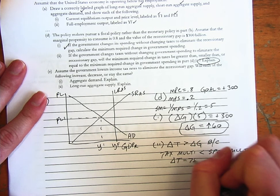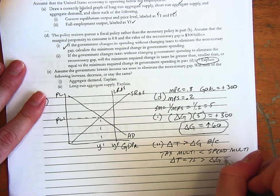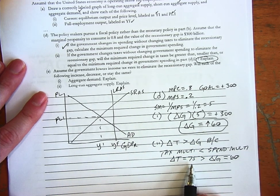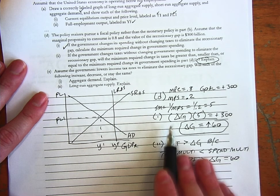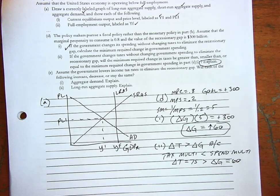So you can actually calculate this and say the change in T is greater than 75, and that's bigger than the change in government spending, which would be 60. I'm using the tax multiplier to find that. The tax multiplier is negative 4. In order to close a gap of 300, you would need a $75 tax cut.